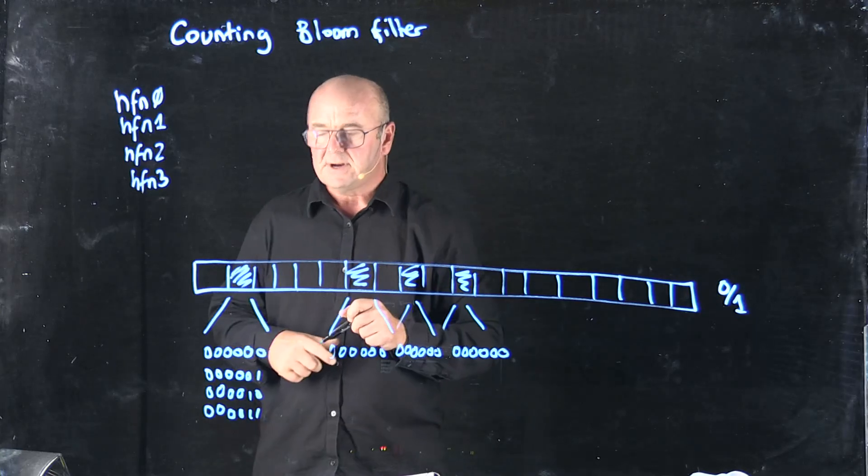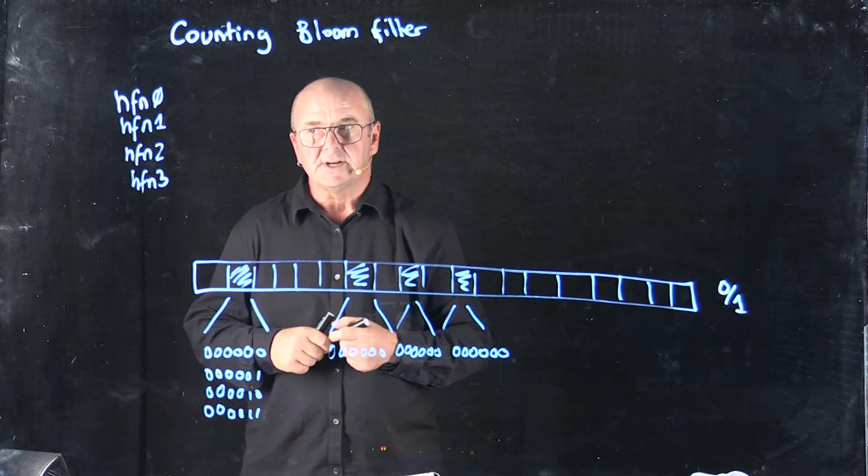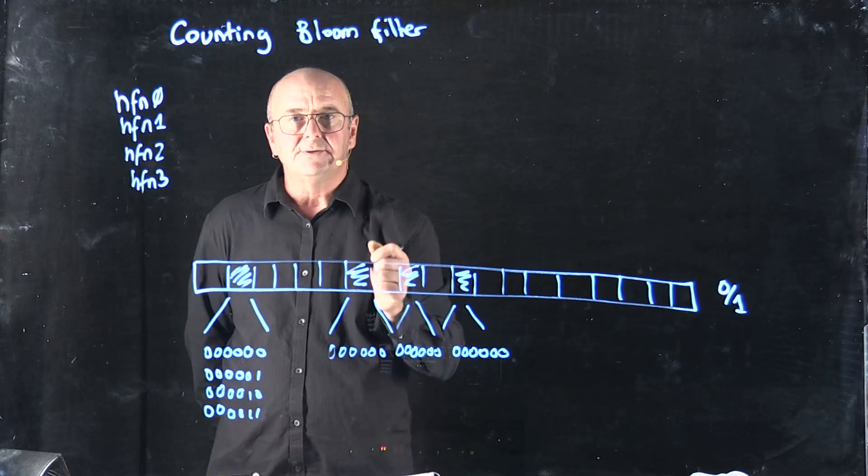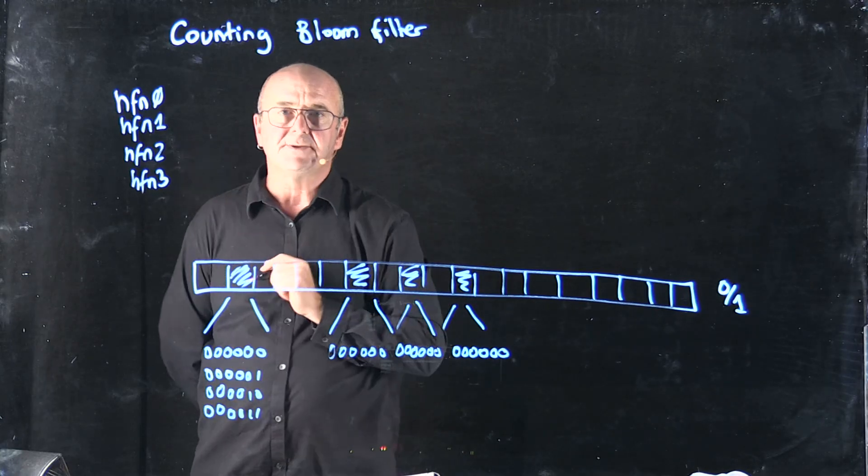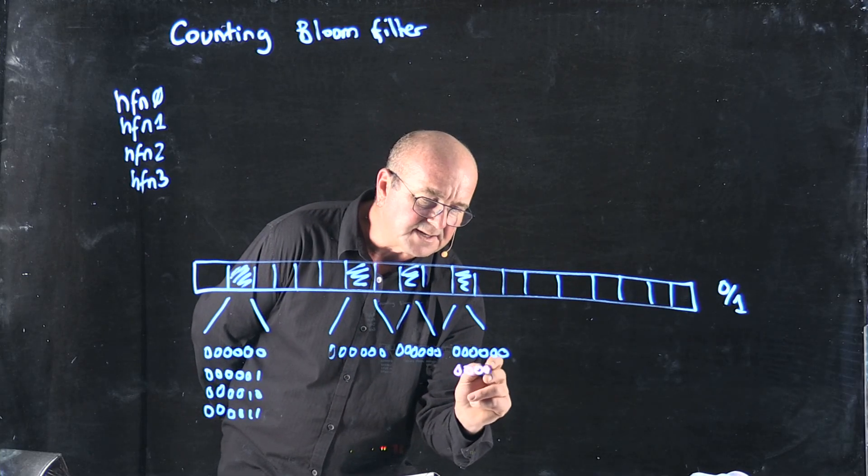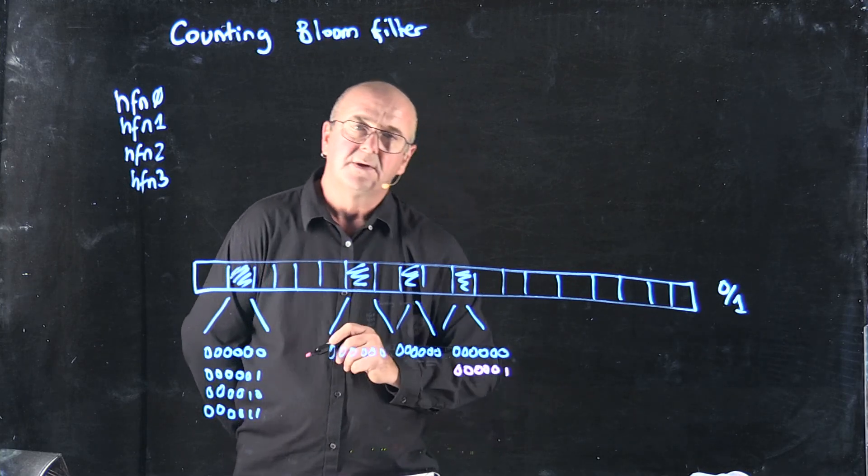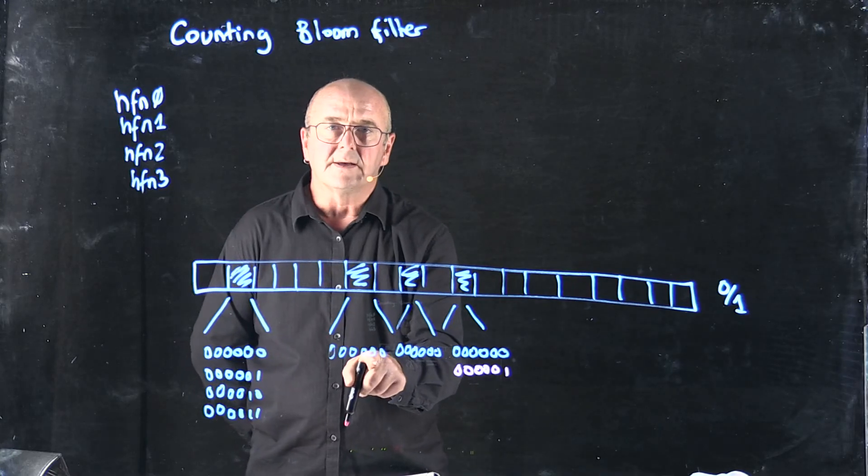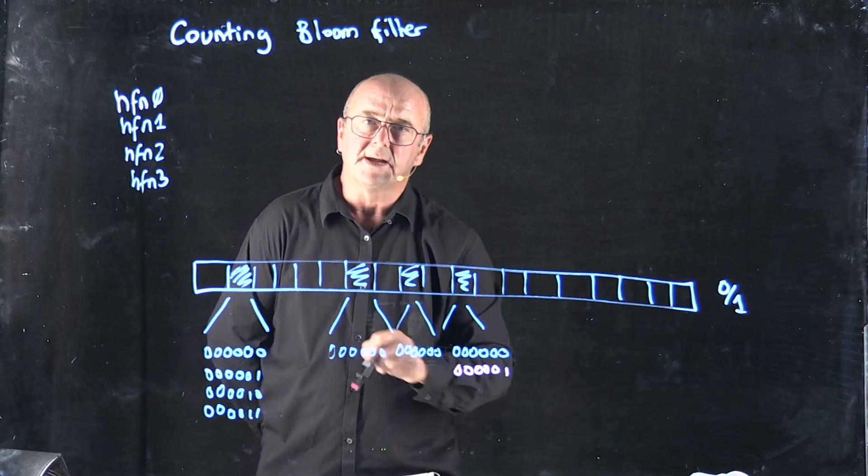Now remember one of the features of the bloom filter is that occasionally you're going to have two different k-mers pass through different hash functions and get the same value. And so maybe instead of incrementing this bin with k-mer number 1, I increment it with k-mer number 2.